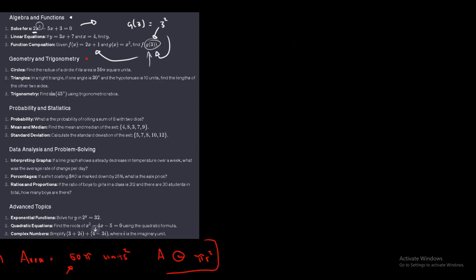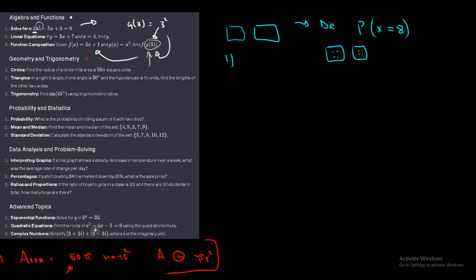Now let's look at probability and statistics. What is the probability of rolling a sum of 8 on 2 dice? We need to map out all combinations that give a sum of 8. We have 4 and 4, which gives 8. We have 6 and 2, and 2 and 6, both giving 8.